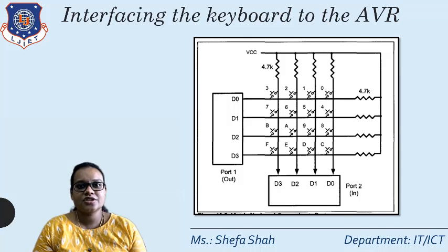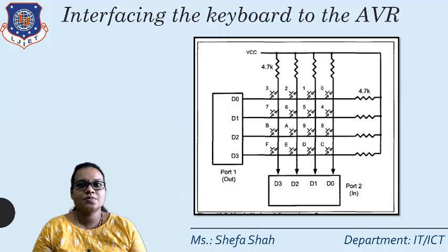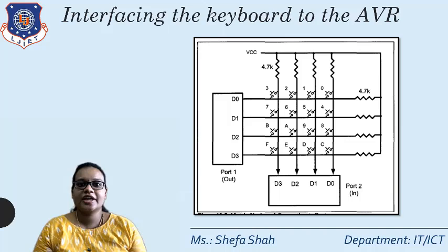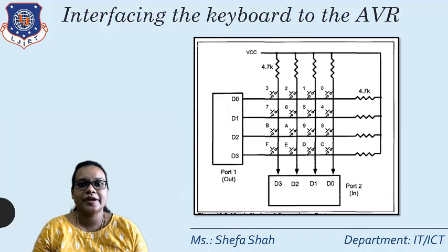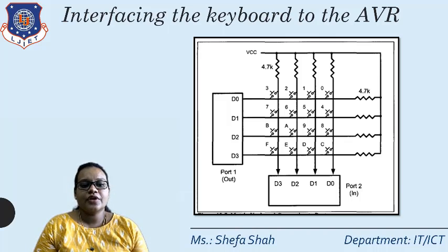Whenever a key is pressed, we find out which key has been pressed using programming. The rows are grounded first, and based on this we check which key has been pressed. The pressed key will be set to one, and from that particular intersection of rows and columns we get to know which key on the keyboard has been pressed, which is then displayed on the screen.